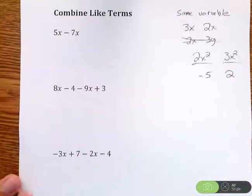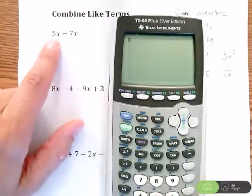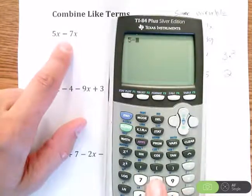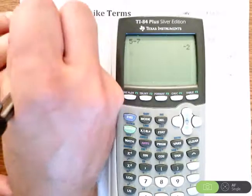This first problem I have 5x minus 7x. So I see this term has an x, that term has an x, they can be combined. If you're struggling a little bit with this, here's how you combine them. I would use a calculator and look at well, I have 5 minus 7.